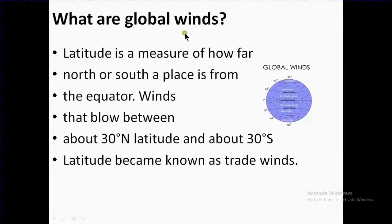What are global winds? Latitude is a measurement of how far north or south a place is from the equator. You can see here the equator, so you can easily find out the latitude measurement.